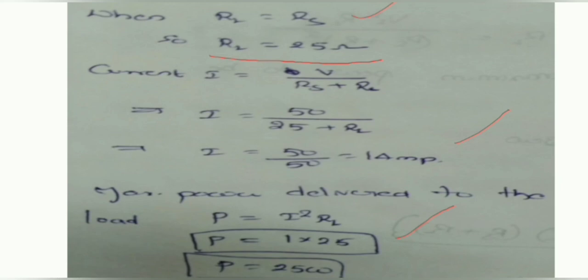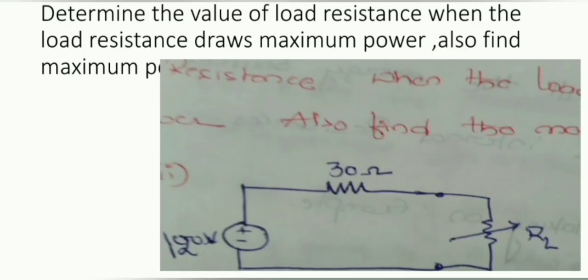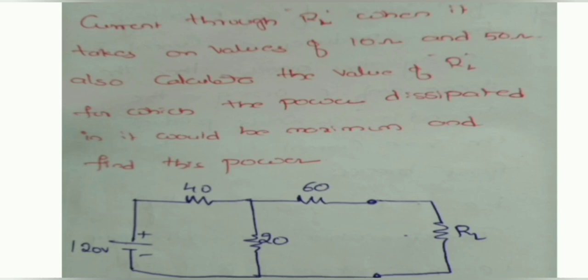Example 2: determine the value of RL when the load draws maximum power and find the maximum power. Here 120V is given with a 30-ohm resistor and RL. According to this theorem, RL equals RS equal to 30 ohms. Current is equal to V divided by (RS + RL), giving 0.5 amperes. Maximum power delivered to the load is P equal to I² × RL, which equals 7.5 watts.